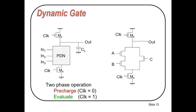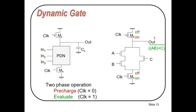For the function (AB + C)', A and B are in series and this AB combination is in parallel with transistor C in the pull-down network. With 3 inputs, we require only 5 transistors — N+2 transistors — to implement the function. Compared to static CMOS, the number of transistors is reduced in dynamic CMOS logic.